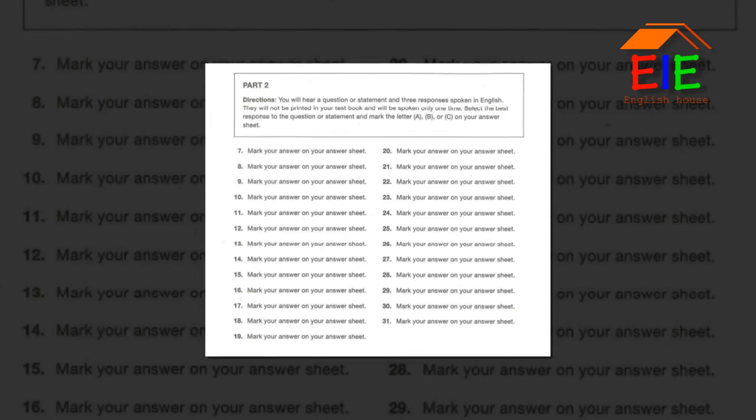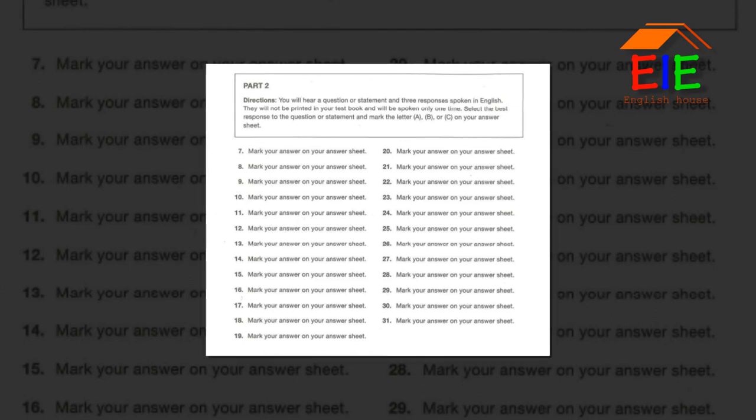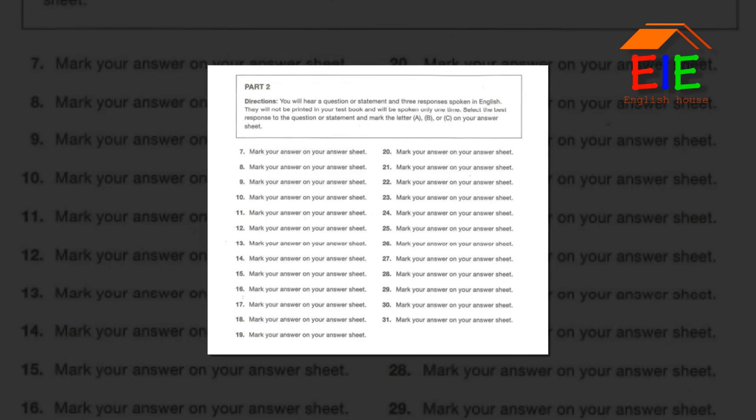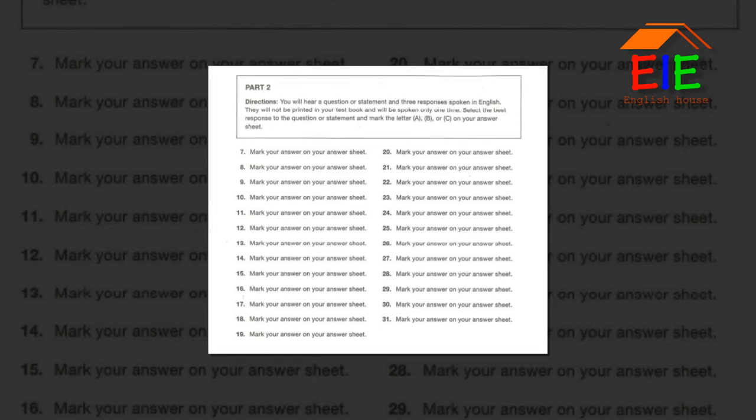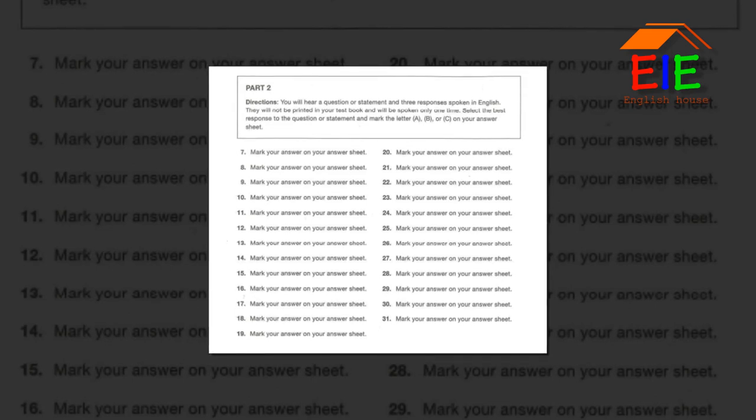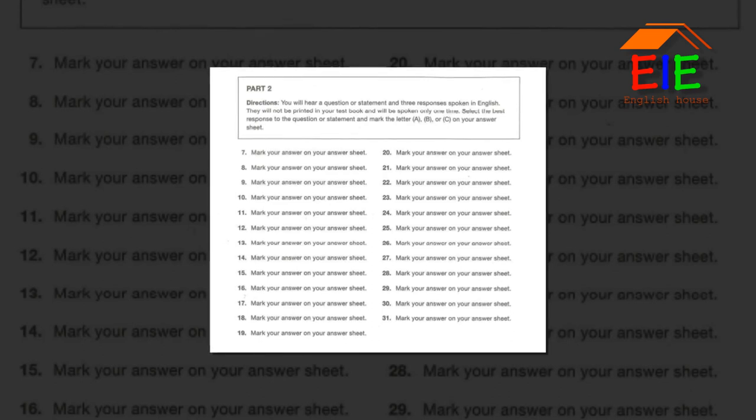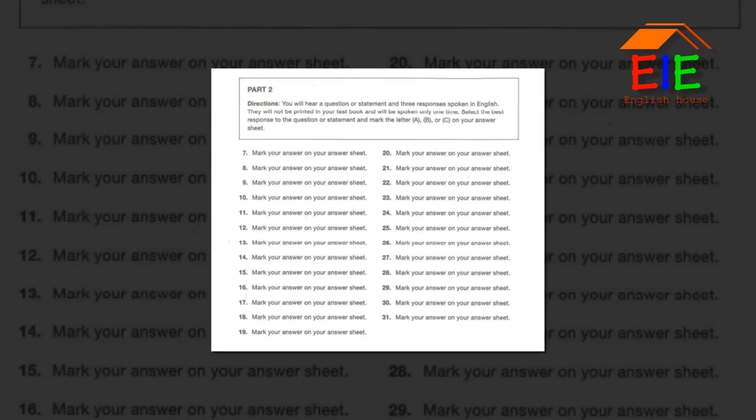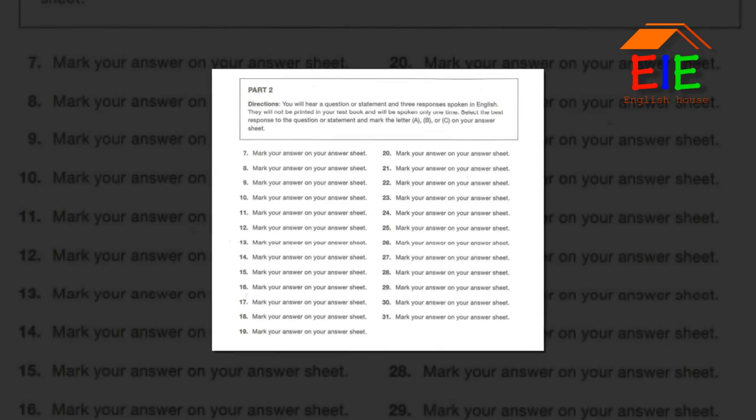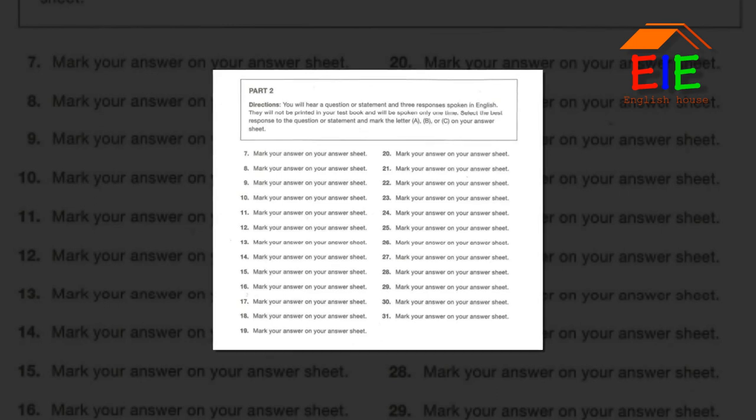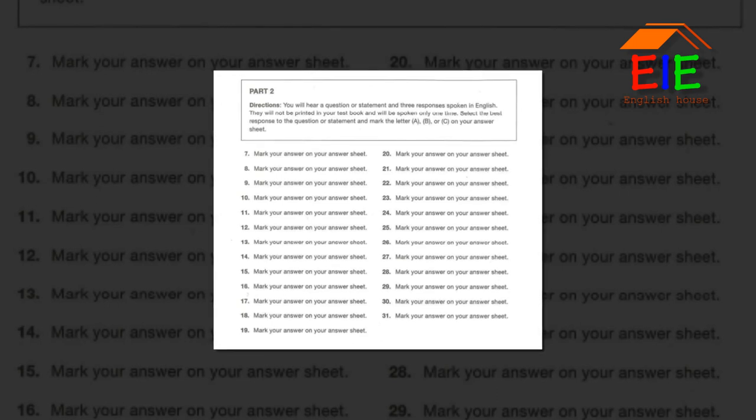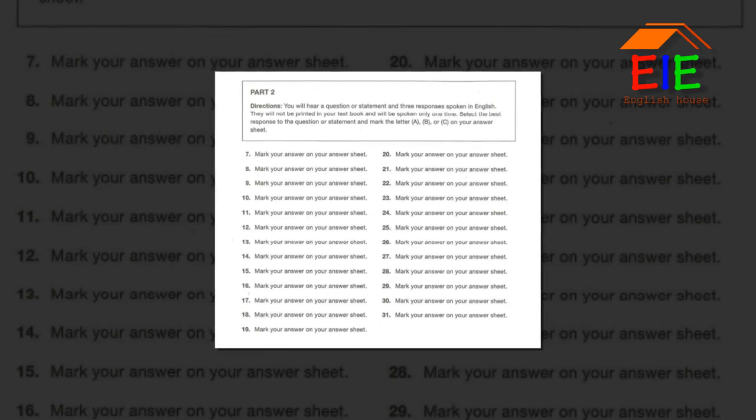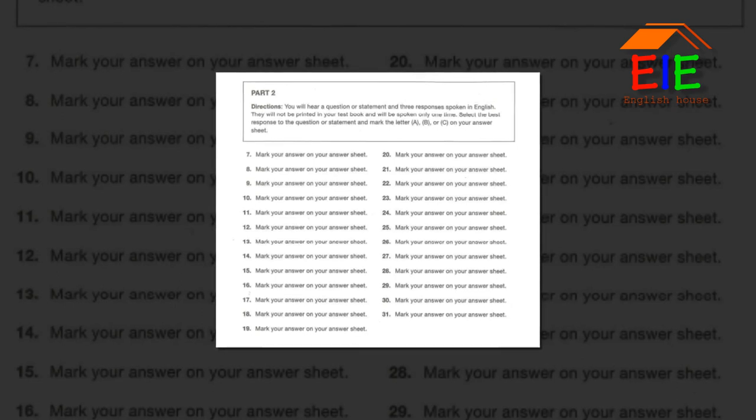Number 15: Are you available for an interview next Tuesday? A. Yes, I'd be happy to come in. B. A bit earlier next time. C. Sure, let's go over the weekend. Number 16: How did you make this soup? A. Quite a long time. B. Here's a copy of the recipe. C. For Saturday night.